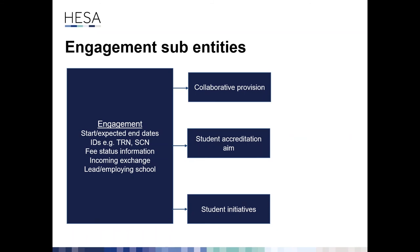Student initiatives: if an initiative applies to all students on a course (e.g., all students are higher apprentices), it's returned at course level. If only some students on the course are on a higher apprenticeship, it's not returned at course level — instead, it's returned in the student initiatives entity for each individual student it applies to.